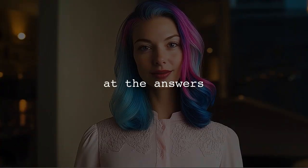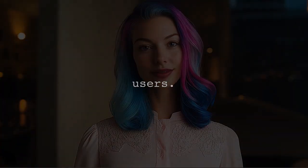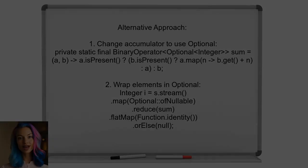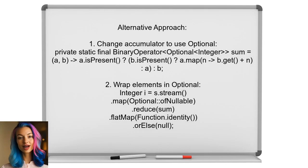Now let's look at the answers provided by other users. An alternative solution suggests modifying the accumulator to work with Optional instead of null. This way, you can avoid null pointer exceptions. The user recommends wrapping elements in Optional before reducing and unwrapping the result afterward.